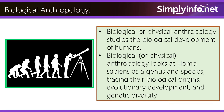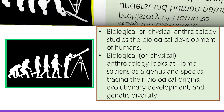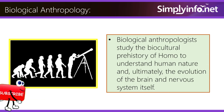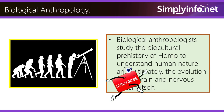Biological or physical anthropology studies the biological development of humans. It looks at homo sapiens as a genus and species, tracing their biological origins, evolutionary development, and genetic diversity. Biological anthropologists study the biocultural prehistory of homo to understand human nature and ultimately the evolution of the brain and nervous system itself.